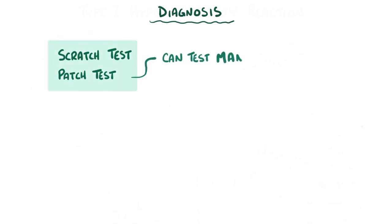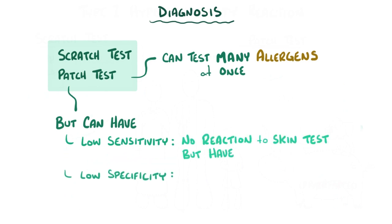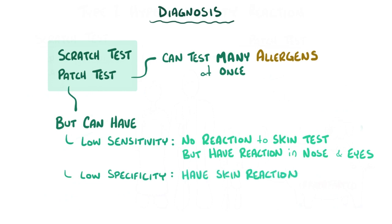These tests can evaluate a lot of allergens at once, but they can sometimes have low sensitivity as well as low specificity. In other words, sometimes a person might have no allergic reaction on the skin test but have a localized allergic reaction affecting the nasal cavity and eyes — that's low sensitivity. Other times a person might have a skin reaction to something even though they don't normally have symptoms when they encounter an allergen in everyday life, and that would be low specificity.